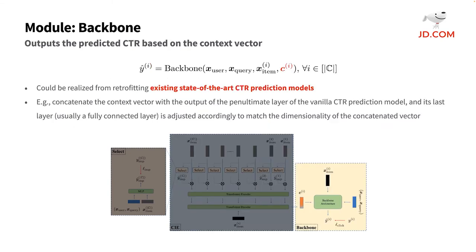The backbone module is the essential component to predict CTR. It could be realized by retrofitting existing state-of-the-art CTR prediction models. In other words, our CRM framework could enhance a wide variety of CTR prediction models already in production, showing great application value. In our implementation, we simply concatenate the context vector with the output of the penultimate layer of the vanilla CTR prediction model, and its last layer — usually a fully connected layer — is adjusted accordingly to match the dimensionality of the concatenated vector.